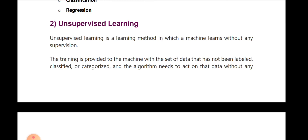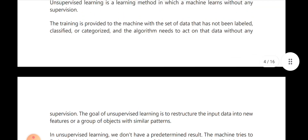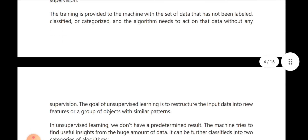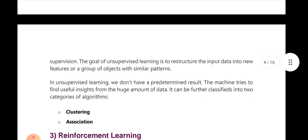In unsupervised learning, the training data provided to the machine has not been labelled, classified, or categorised, and the algorithm needs to act on that data without any supervision. There is no labelled data, no classification — the machine must learn on its own. That is the unsupervised learning approach.